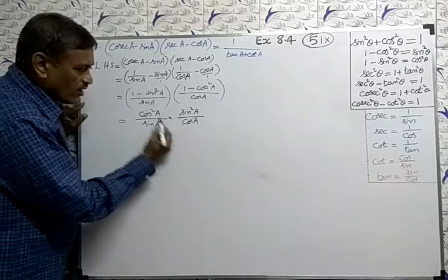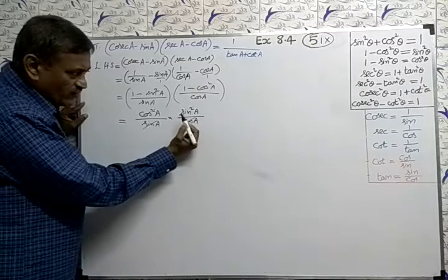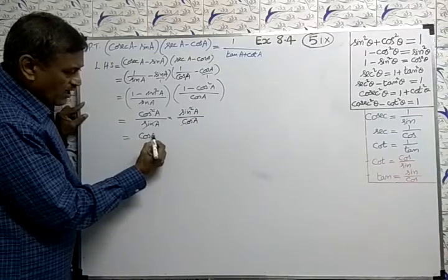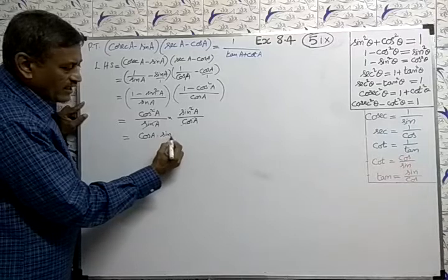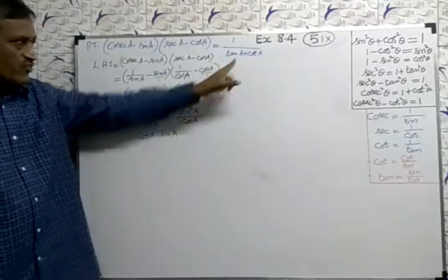So, we can cancel this cos and 1 cos we can cancel. Here, sin we can cancel. Only one sin can cancel. So, remaining is what? Cos A and sin A remaining. Cos A into sin A.